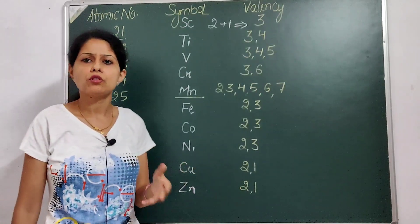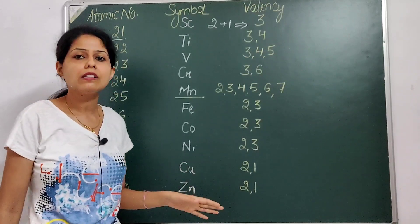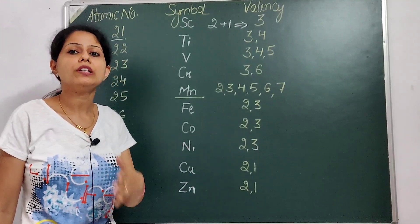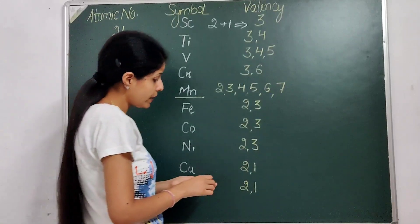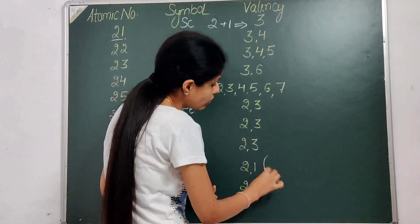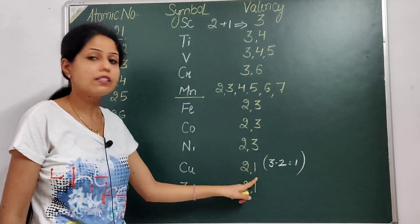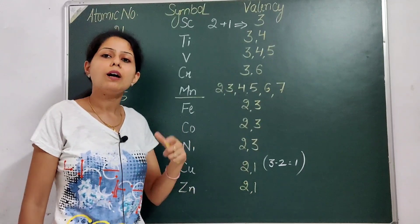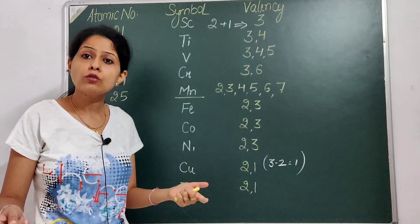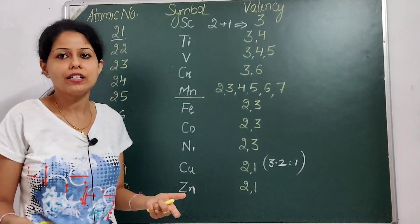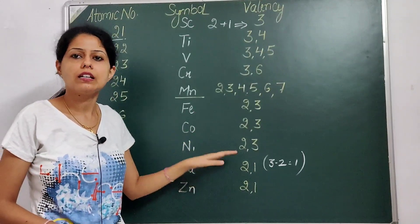Next comes element 29, Copper. Copper's valencies are also commonly known since it is frequently used in 9th and 10th standard — its 2 valencies are 2 and 1. To remember: take the valency above (which is 2), then apply the exception and subtract 1 to get the second valency — so 2 minus 1 gives 1. You can use whichever method is convenient for you.